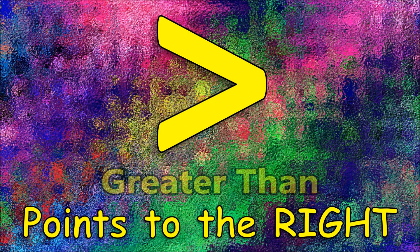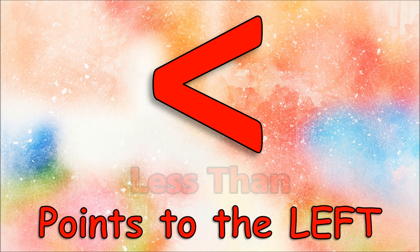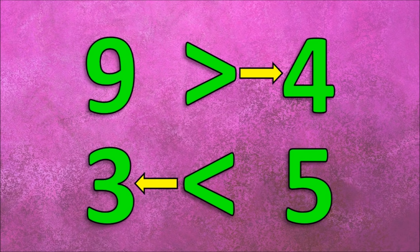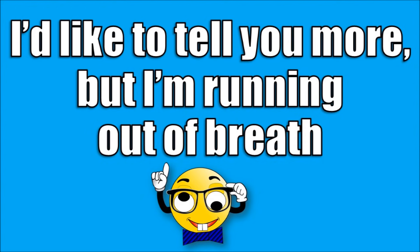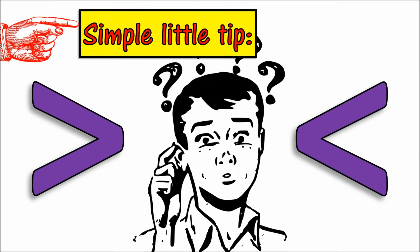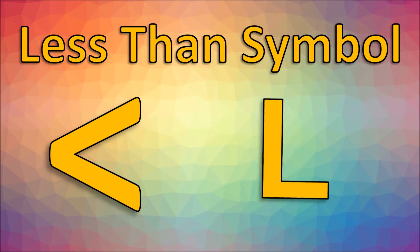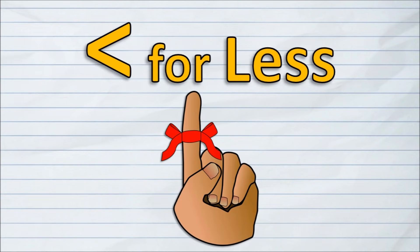The greater than symbol points to the right. The less than symbol points to the left. The symbol always points to the number that's smaller. Sometimes it can be hard to remember which symbol is which, so here's a simple little tip: the less than symbol is shaped like an L. Just remember L for less — that's how you can tell.